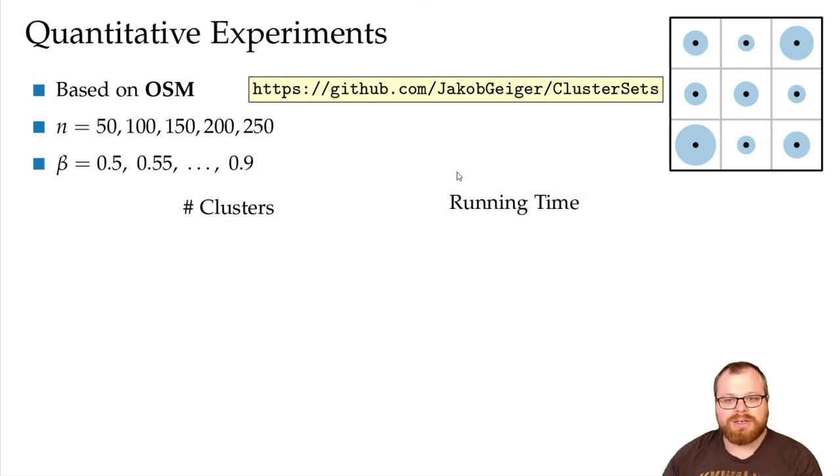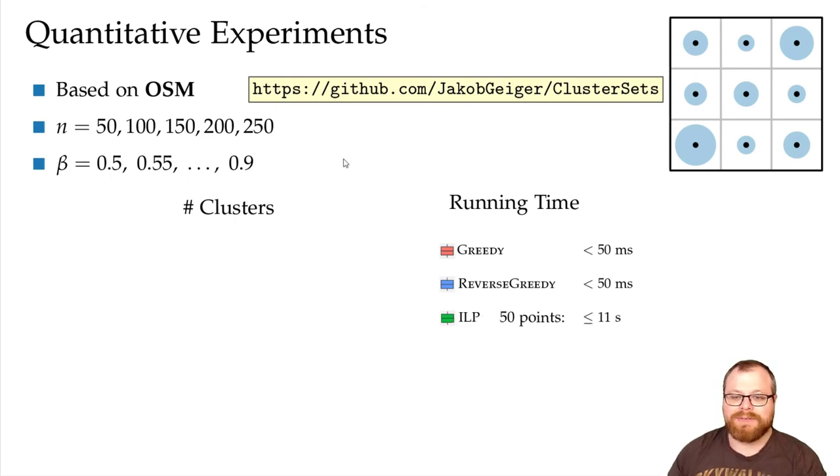First we want to talk about the running time. For all of these instances, both the greedy and the reverse greedy algorithm always could find solutions in less than 50 milliseconds. The ILP worked well for instances of 50 points where we got solutions within 11 seconds, but even for 100 points it required up to 1.8 hours, and for 150 points there were some instances where we stopped the solver after 2 days.